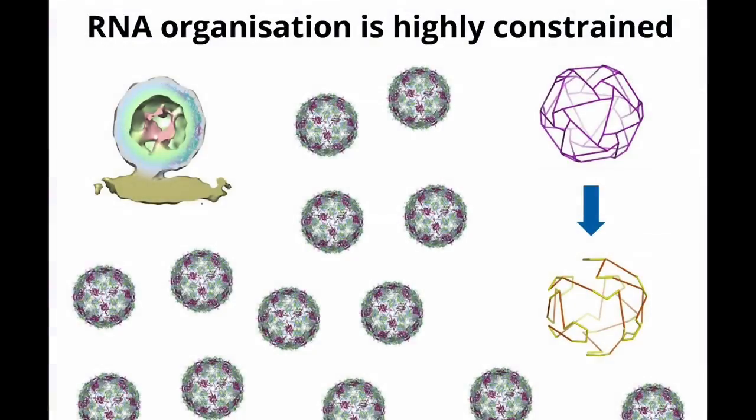A straightforward bioinformatics approach alone would not be enough to address the problem and uncover those signals. But by using mathematics in addition, you can actually make inroads into this. In order to do this, we really need to understand virus structure better. From an experimental point of view, we use cryo-electron microscopy.